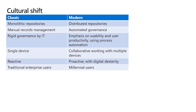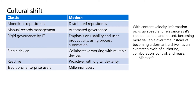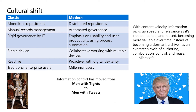The traditional enterprise users and millennial users work very differently — it's the age of Facebook, Snapchat, and Twitter. You have to provide the right tools, environment, and technology so that generation can fit within the organization. Regarding content velocity, information picks up speed and relevance as it is created, edited, and reused — becoming more valuable. In the past you would create a document, store it, and people might occasionally use it. Now it's far more collaborative; information is constantly being changed and morphed, and the technology needs to be in accordance with that.